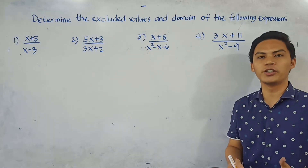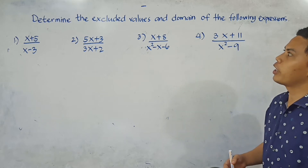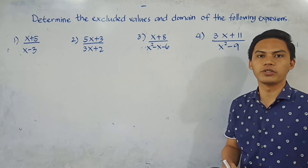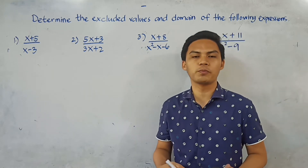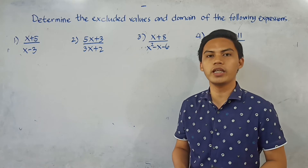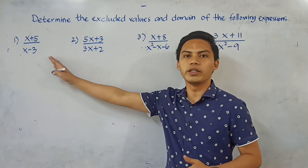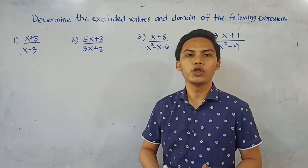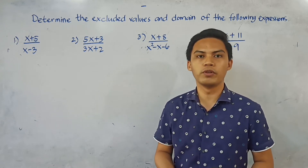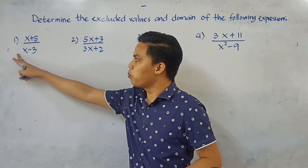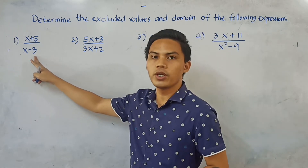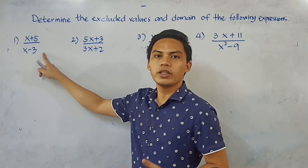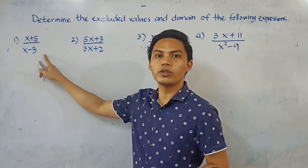We are going to determine the excluded values and the domain of the following expressions. The domain refers to all possible values we can substitute for the variable, as long as the denominator is not equal to 0. Let's look at what values, when substituted for x, will NOT make the denominator equal to 0.